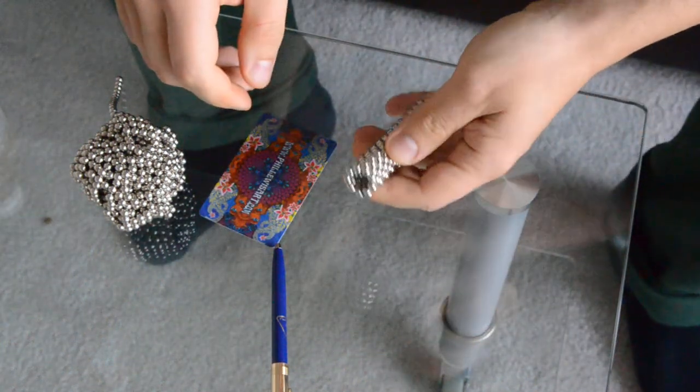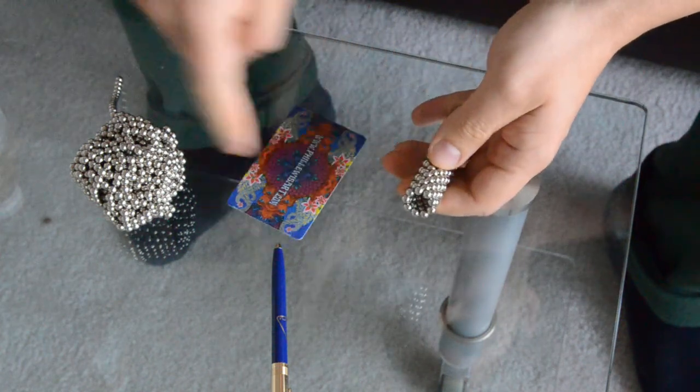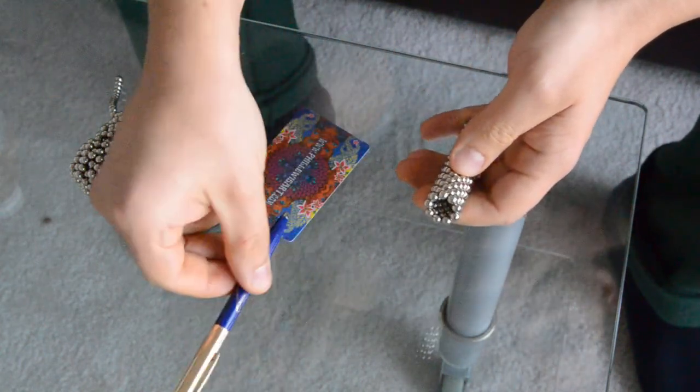Alright, so what we're going to do is we're going to create a truncated octahedron. We're going to have a splitter card and a pen.